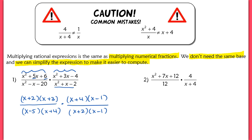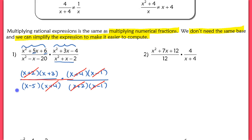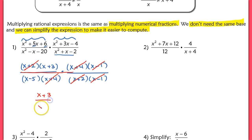Right away I can start cross-canceling factors — something over here can cancel with something over here, just like with numbers. I see x plus 2 and x plus 2, which cancel. I also see x minus 1 and x minus 1, which cancel. Treat this as one big fraction with everything on top divided by everything on the bottom. The x plus 4s also cancel, and I'm finally left with x plus 3 over x minus 5.